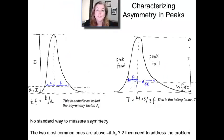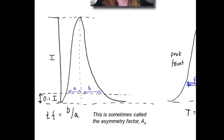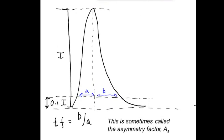So what you want to do is kind of characterize the asymmetry of a peak. And there's two different ways that I've seen people do it in different textbooks. This is not a standardized thing, but these are at least common ways of doing it.